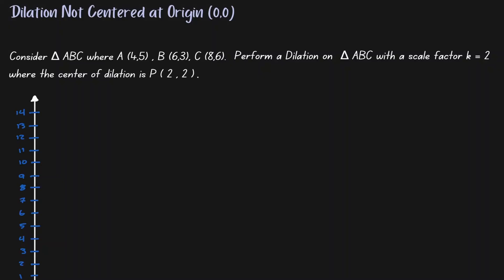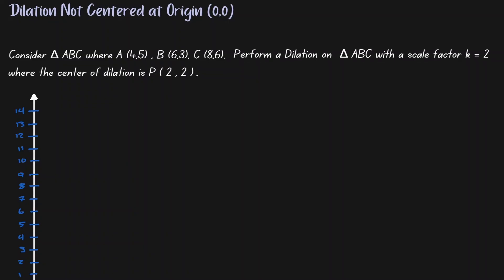Welcome. Let's discuss the idea of dilation where the center of dilation is not at the origin (0,0). Here we have a triangle ABC, where A is located at (4,5), B is at (6,3), and C is at (8,6). We want to perform a dilation on that triangle with a scale factor of 2, but the center of dilation is at (2,2), not at (0,0).